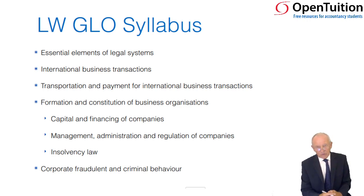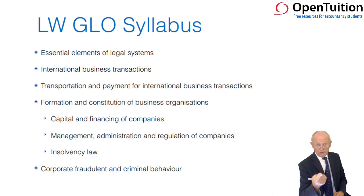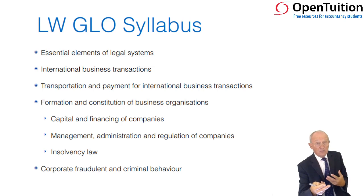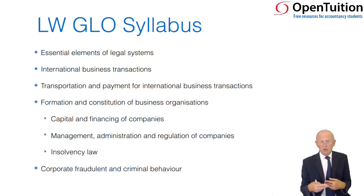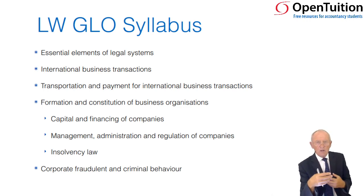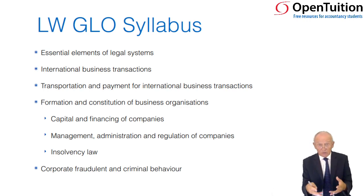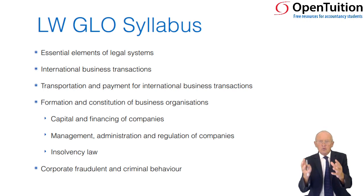Moving to formation and constitution of business organisations, there are basically four. You can operate as a sole trader on your own. You can operate as an agent for a bigger organisation. You can operate as a partnership — many accountancy firms, legal firms, and estate agency firms operate as partnerships, including limited liability partnerships. And finally, companies as we know them: private companies, public companies, charitable companies — company law.